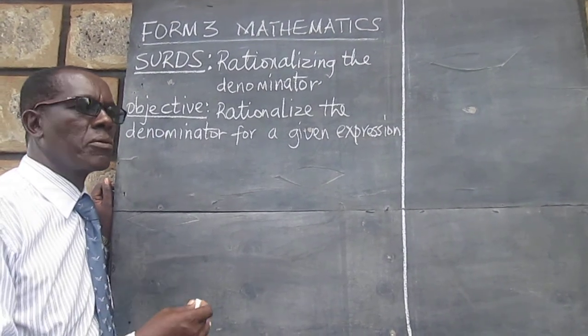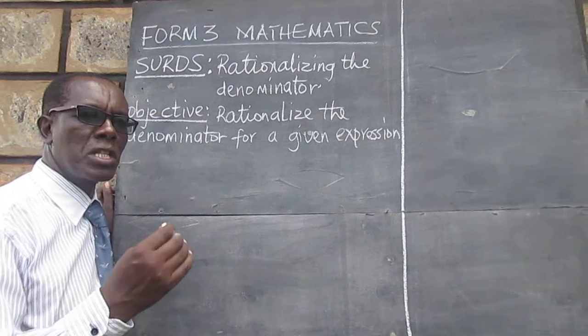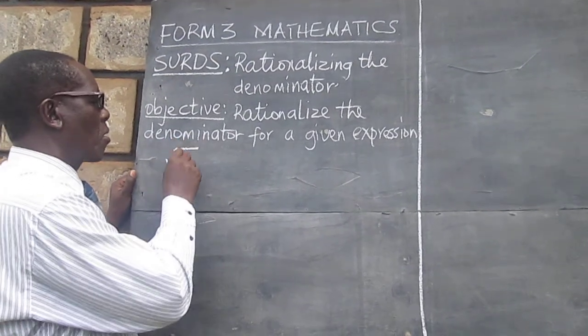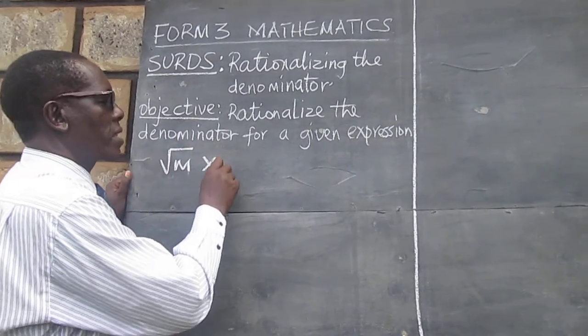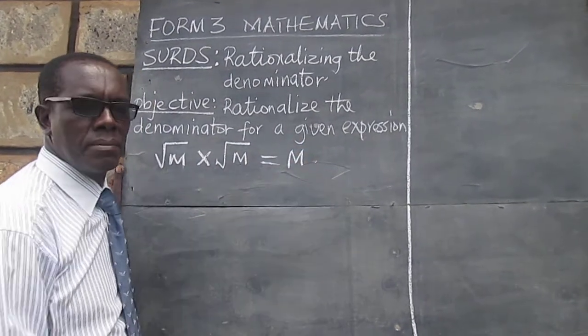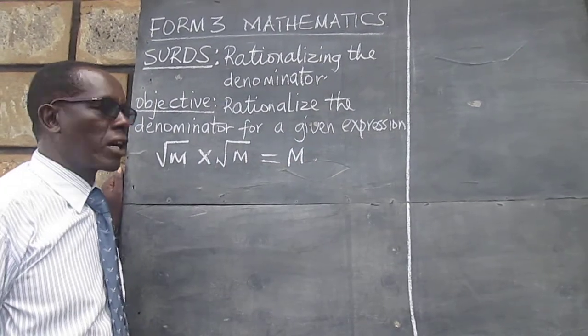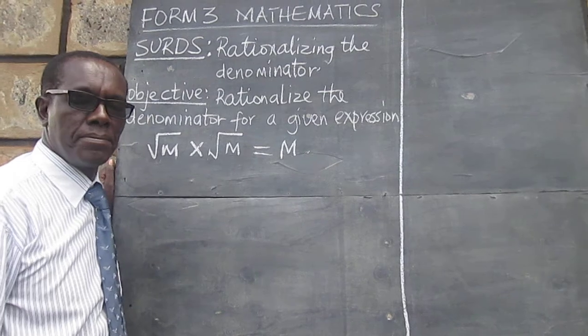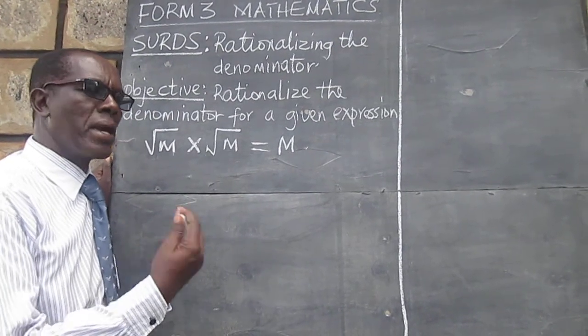So you need to remember that the square root of m multiplied by the square root of m will give us m. We are going to use this idea in making the denominator of a given expression a rational number.